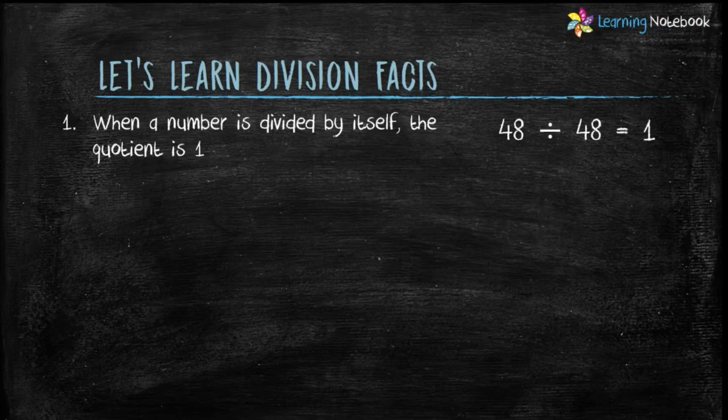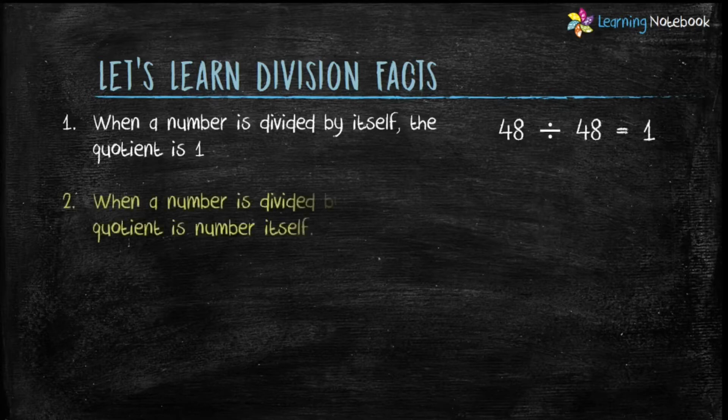Students, you can take any number and divide that number by itself. The quotient would always be 1. Second fact is, when a number is divided by 1, the quotient is the number itself.